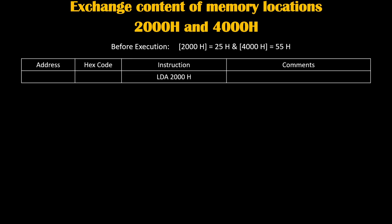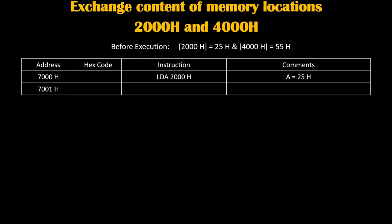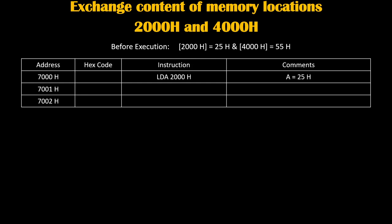We will write the program from memory location 7000h. The first instruction we will write is LDA 2000h. LDA stands for load accumulator, so it will load the accumulator from memory location 2000h. Since 2000h was holding 25h, this 25h value will get loaded inside the accumulator, so our accumulator will become 25h. LDA 2000h is a 3-byte instruction, so it will take 3 memory locations: 7000, 7001, and 7002.